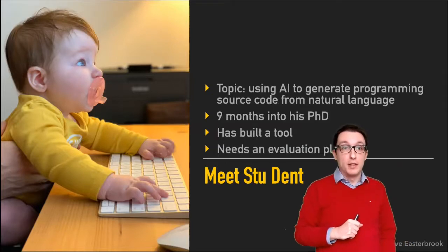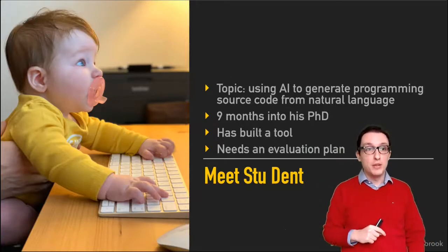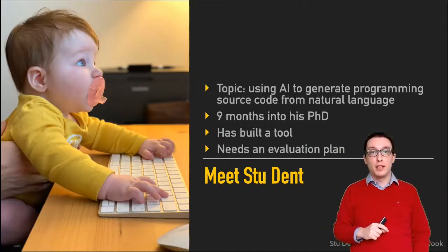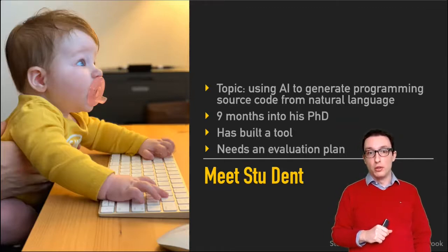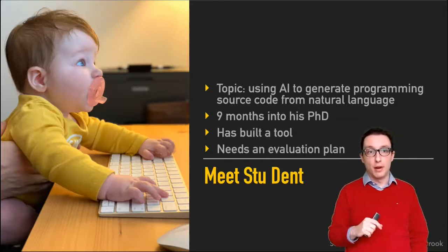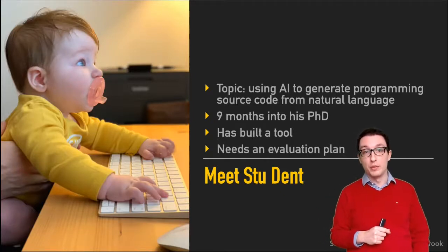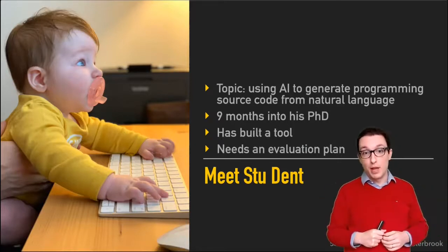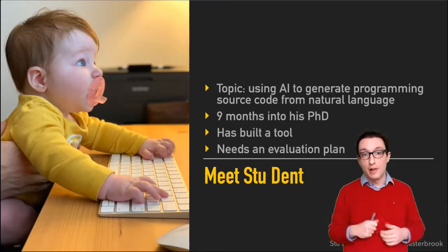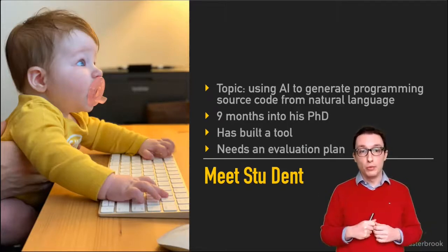Let's go through a use case. Stu is nine months into his PhD and he's working on building some AI to generate programming source code from natural language. He's built a tool that takes natural language as input and generates source code as output, so people don't have to type programs anymore. He needs an evaluation plan for this tool and is getting ready to submit a paper.